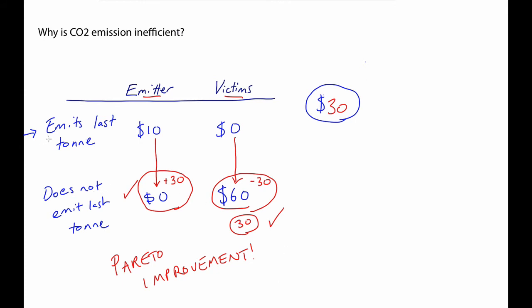Now, you might think this argument's not very interesting if it can only explain the inefficiency of emitting the last tonne of carbon dioxide. But you can simply reiterate the same argument. Having shown that it would be more efficient to not emit the last tonne, you can ask, what about not emitting the second last tonne?